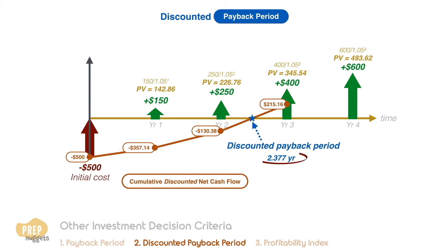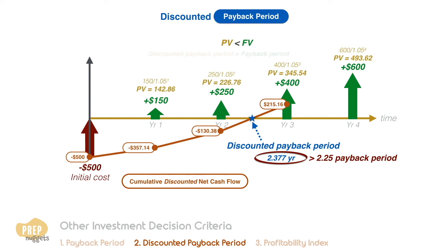Notice that this period is longer than when we use the undiscounted values. The present value of future cash inflows are always lower, so the discounted payback period is always longer than the payback period.